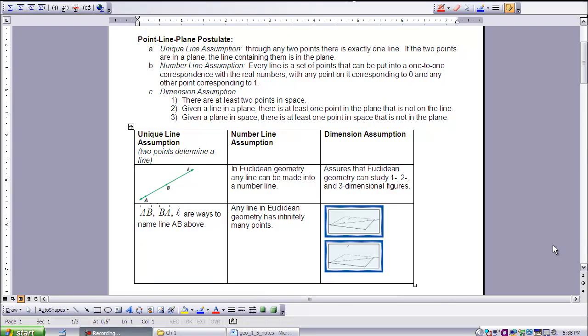The point-line-plane postulate is the very beginning of our rule book. And so we put some things in it that seem very basic. I chose to give you a table here to put this postulate into easier concepts. The unique line assumption, basically, two points determine a line.